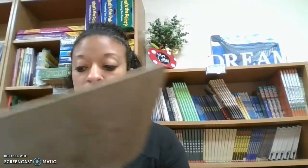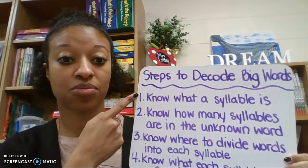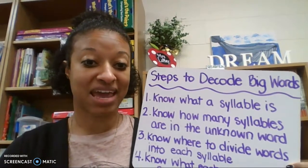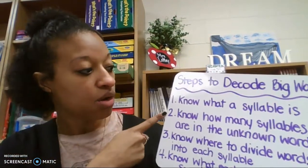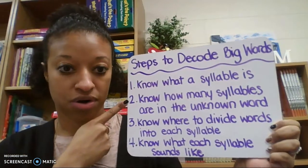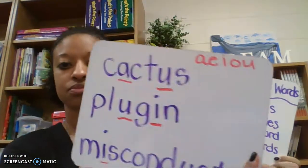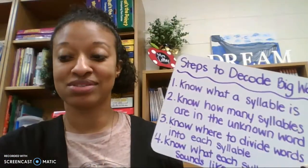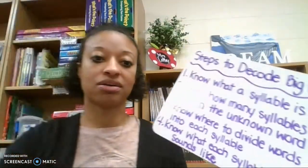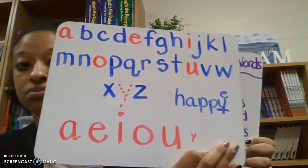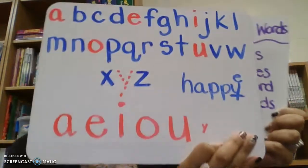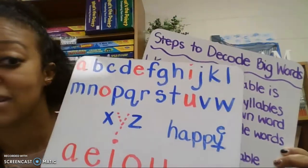All right, guys, so we have been working on the steps to decoding multi-syllabic words — big words with more than one syllable. We have already talked about what a syllable is — remember, the beat of a word. We know how many syllables are in an unknown word. Remember, find the vowels. And what are my vowels? A-E-I-O-U, sometimes Y.